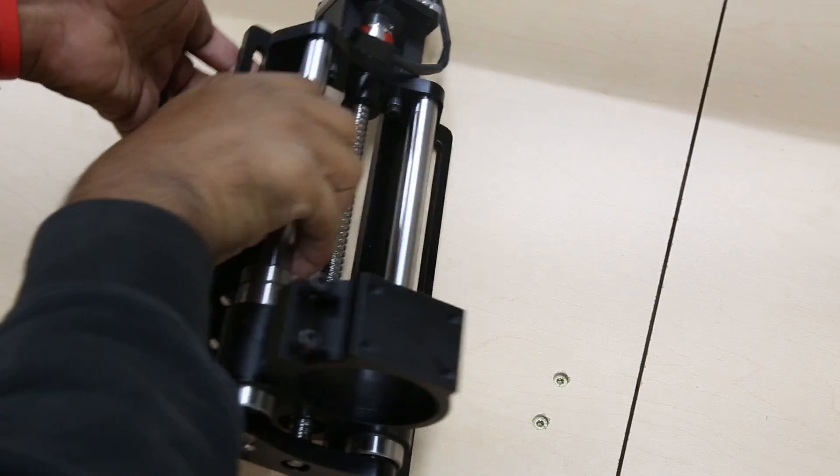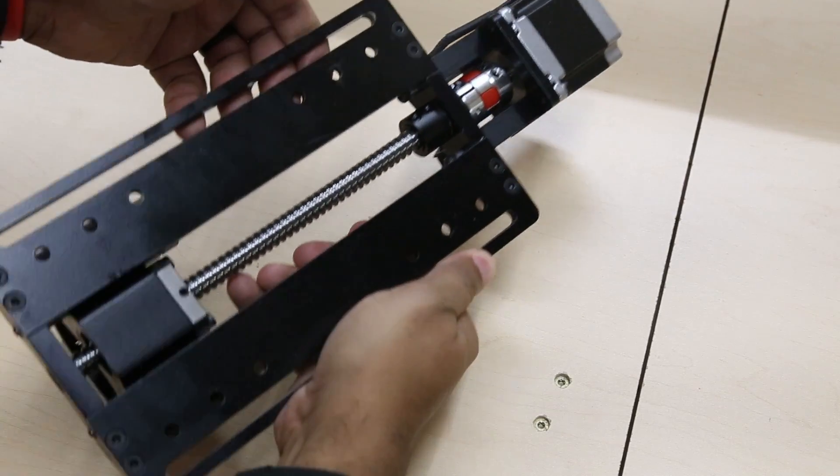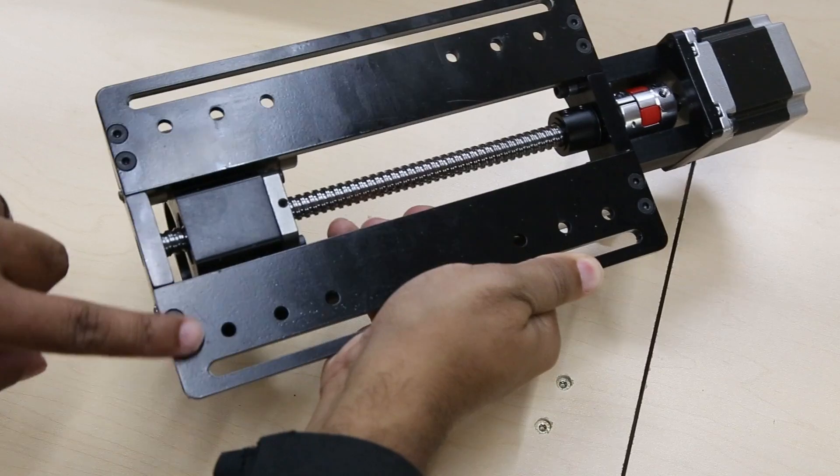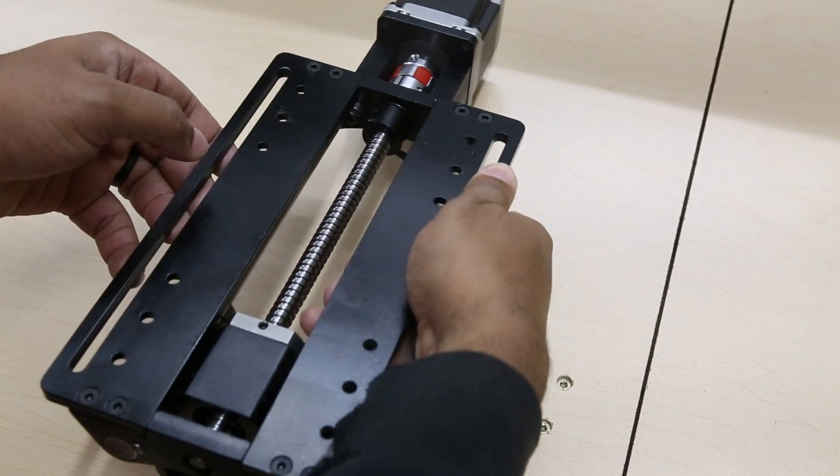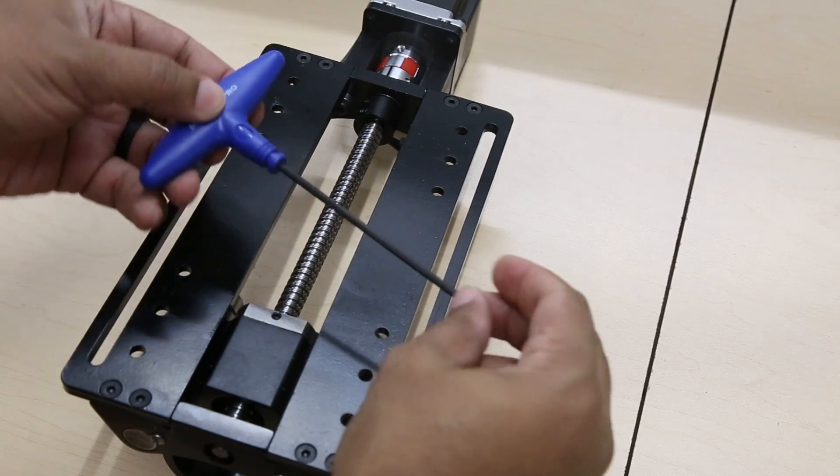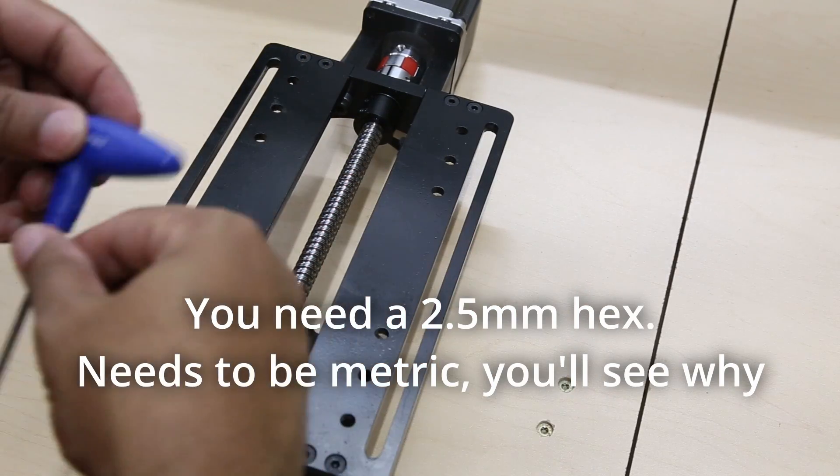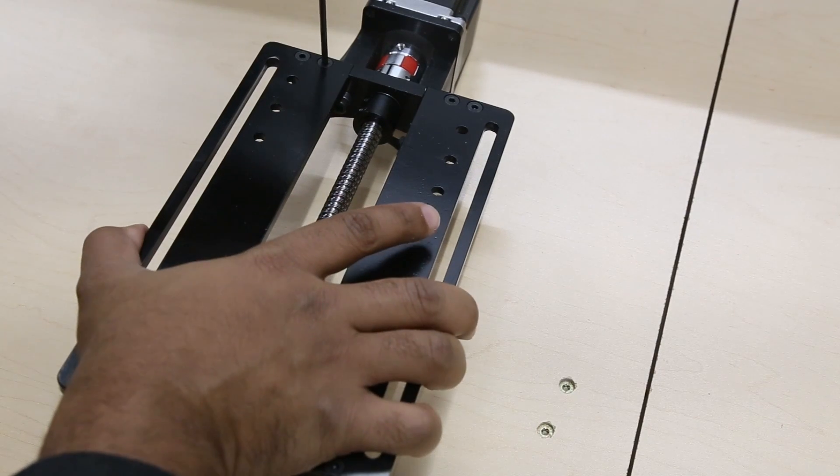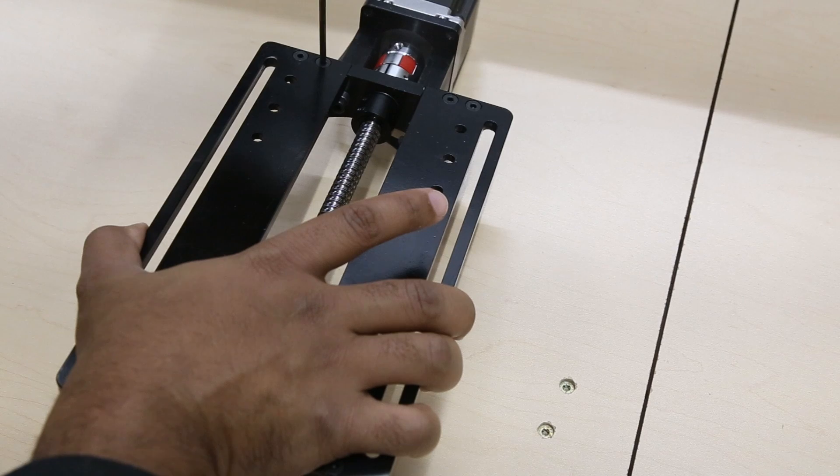I'm going to start by turning it over and removing these 8 screws, so the 4 at the top and the 4 at the bottom. They are in there really good, so I'm using a, I believe this is a 3mm hex wrench. You just want to make sure you have one that fits in there really well and just give it a nice firm twist.